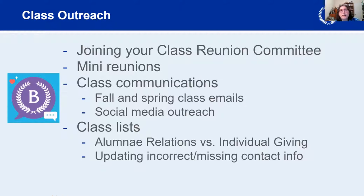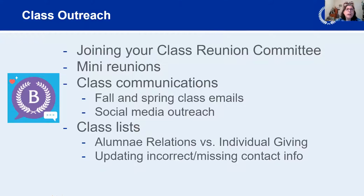When joining your class reunion committee, personalized outreach is really the best. You'll be sending at least a fall and spring class email through alumni relations — a fall save-the-date reminding everyone it's a reunion year, and a spring email with the particulars of class events and dates. For example, reaching out personally to two classmates who attended an online class event and had never been involved before, then inviting them to join the reunion committee and represent the West Coast, is a great approach.